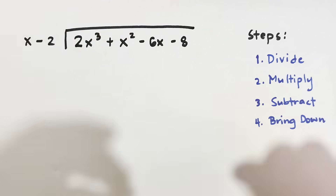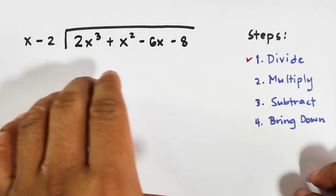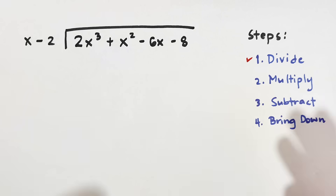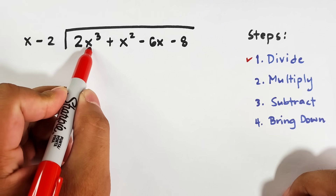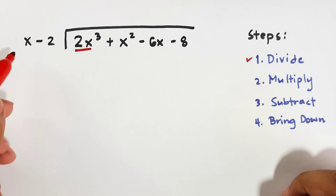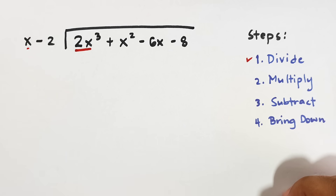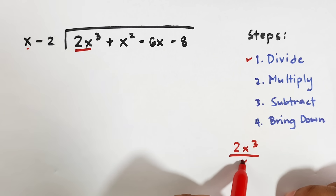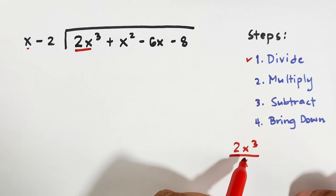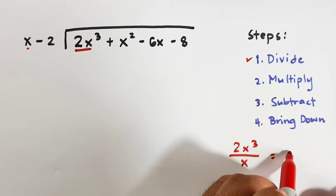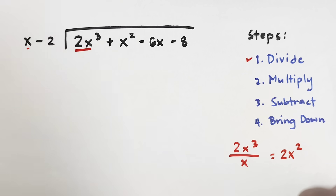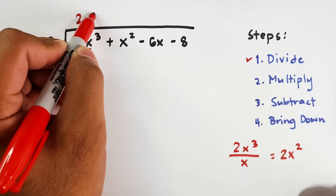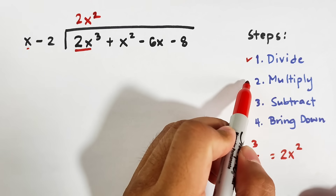First we will divide. You might be confused — are we dividing the entire polynomial by the divisor at the first step? No. You start with just the first term of your dividend divided by the first term of your divisor. So we have 2x cubed divided by x. When we simplify x cubed over x, that gives x squared.